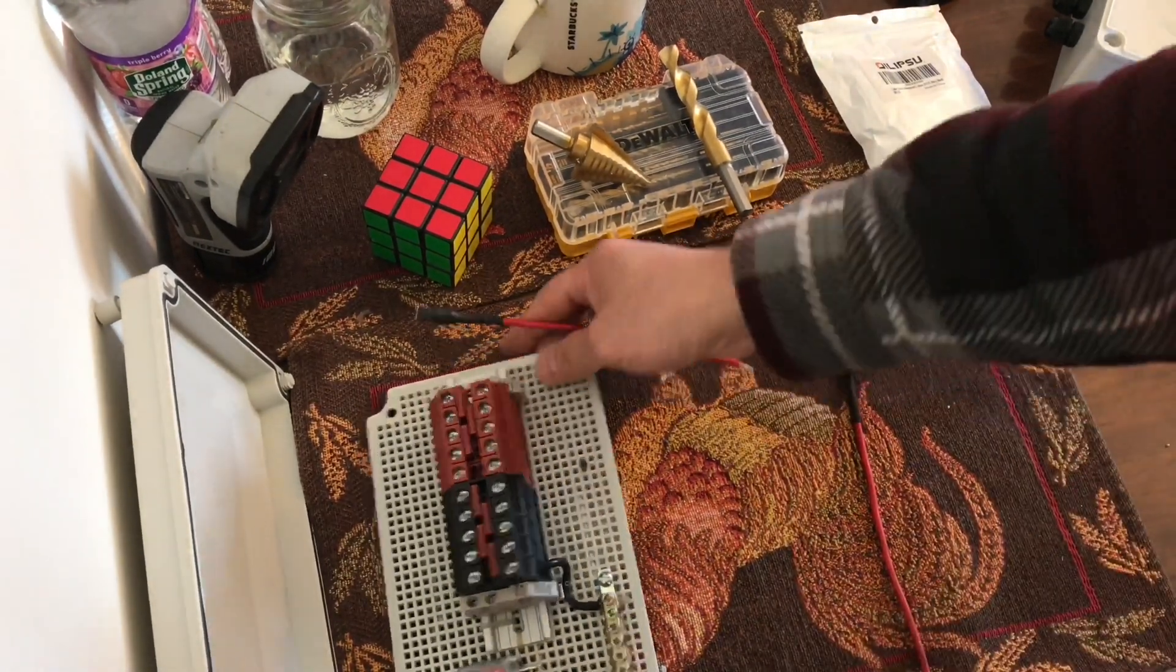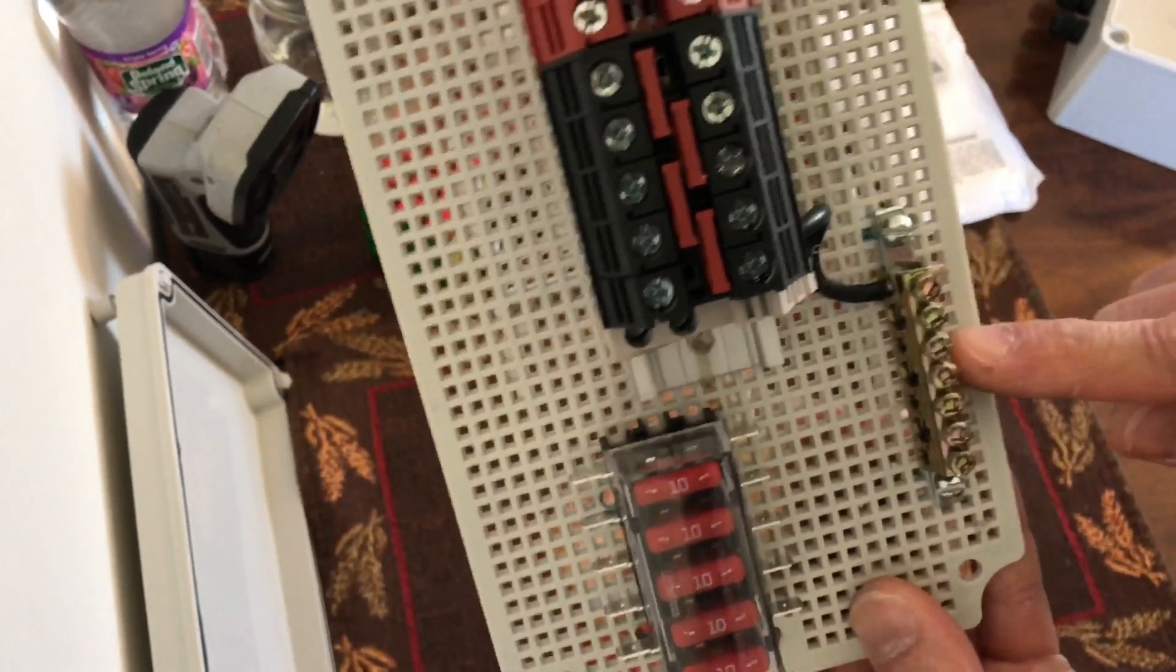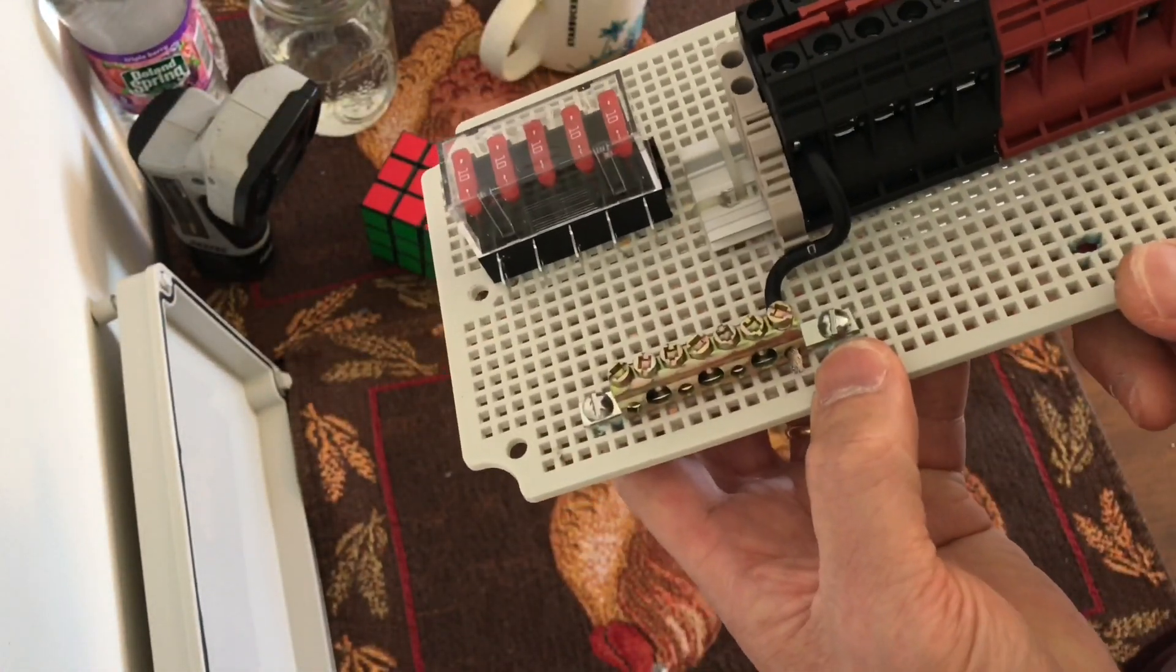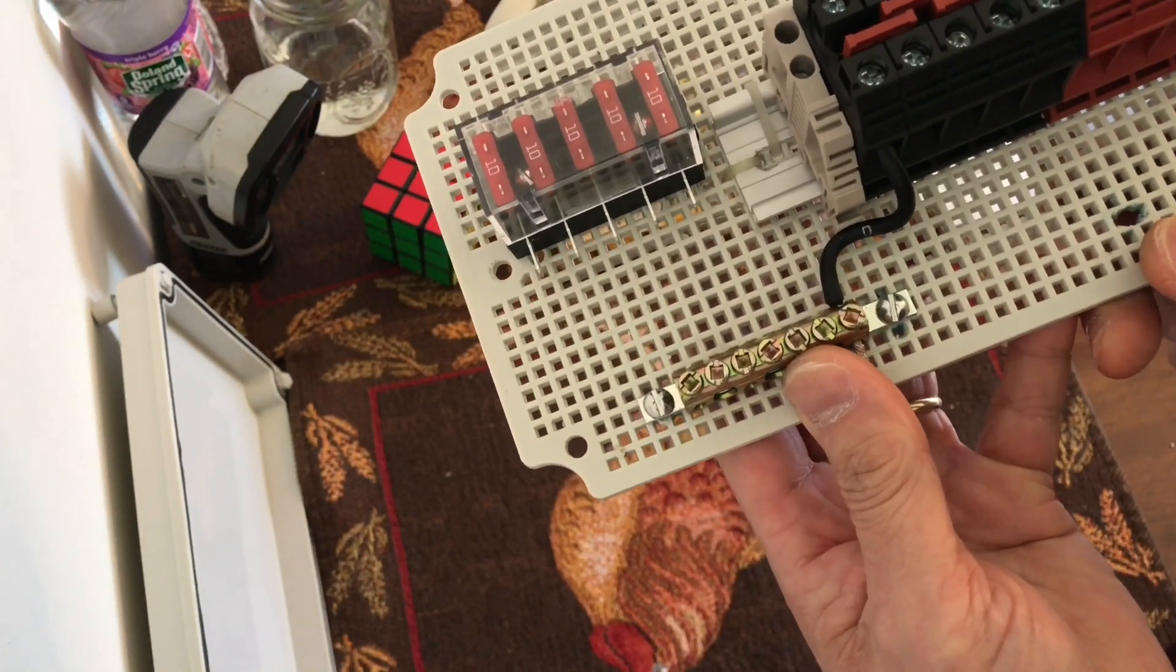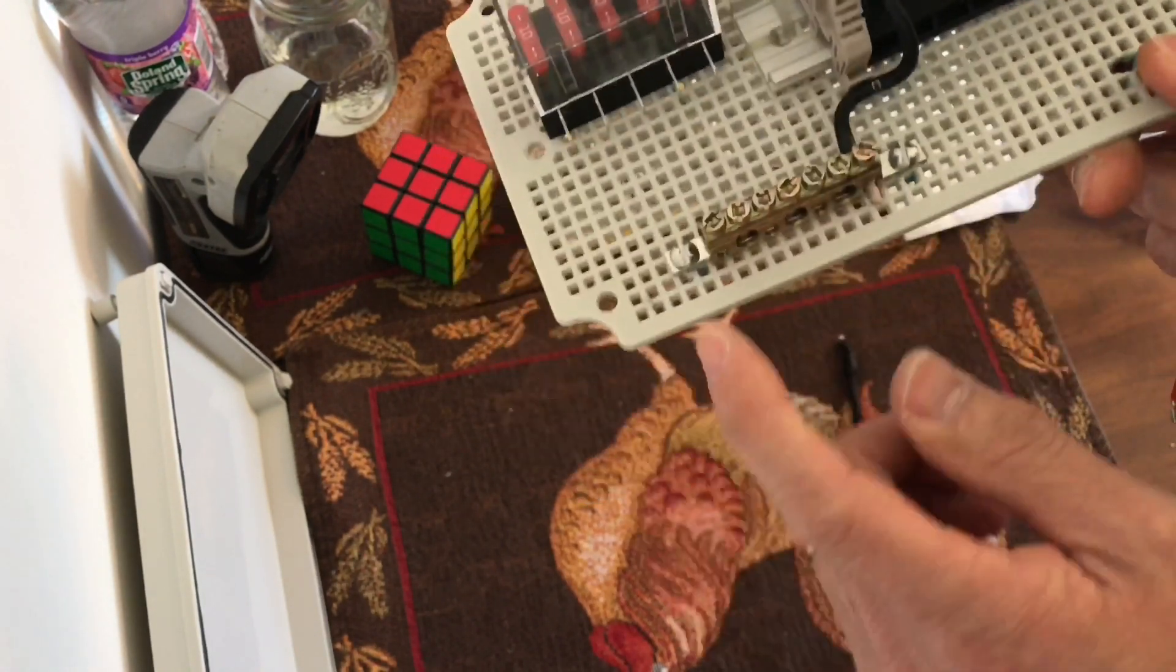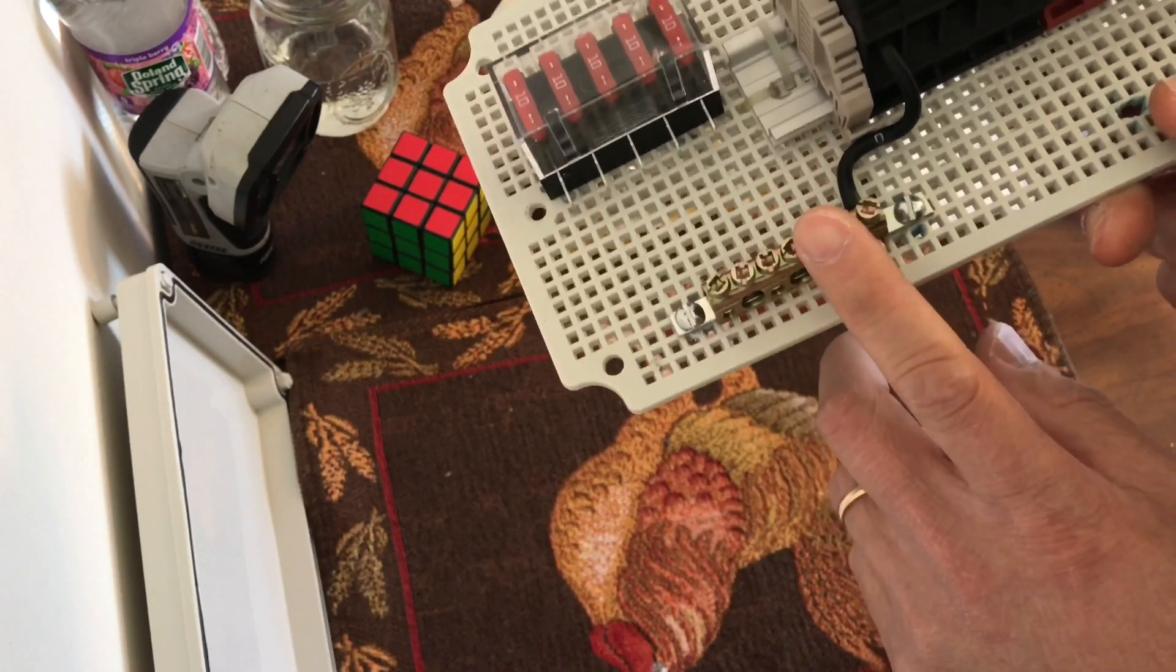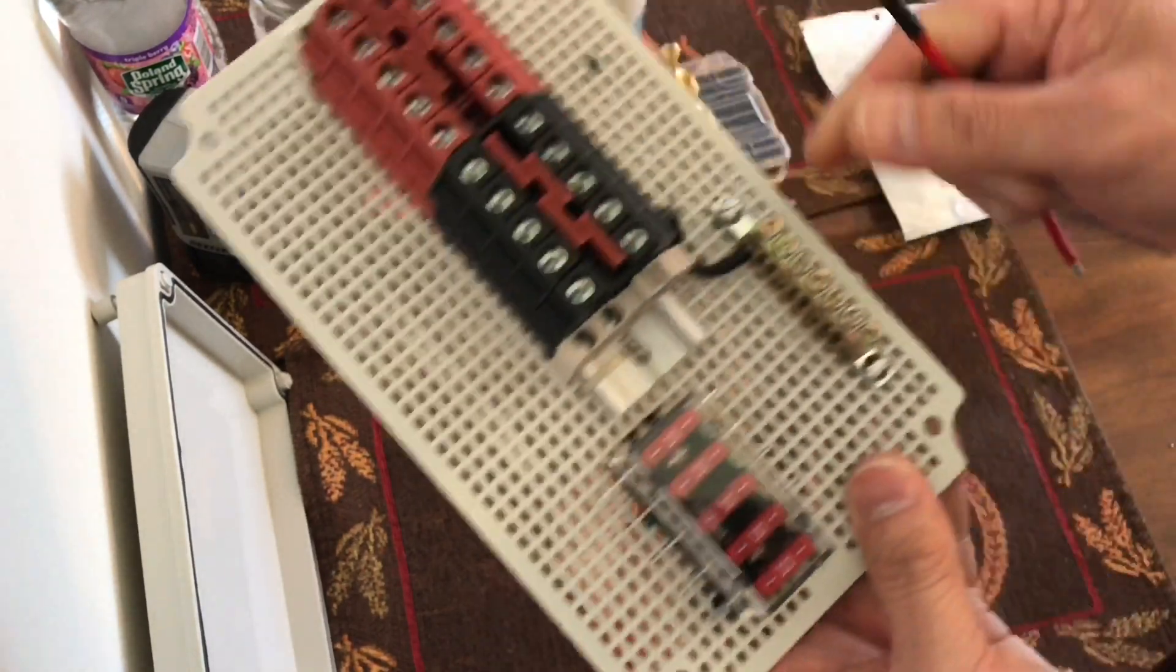Also I got a bus bar right there for negative, just in case I expand the system because I'm gonna be installing some camera system as well. I figured I could use an additional negative bus bar.